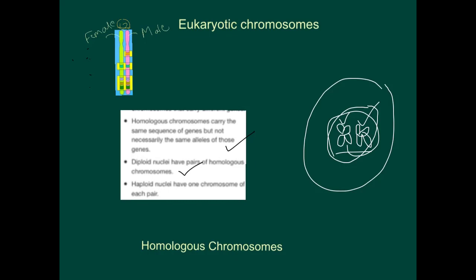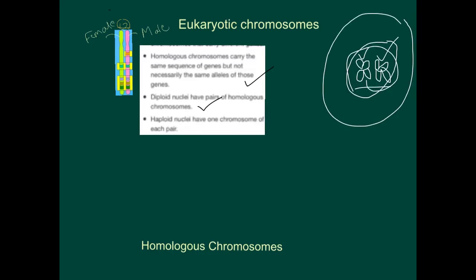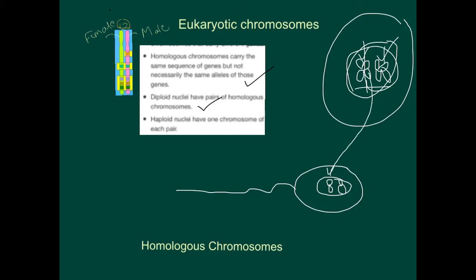Haploid nuclei have one chromosome of each pair. A haploid cell — like a sperm cell — has one chromosome of each pair: half from one side and half from the other. That covers our third learning objective for this class.